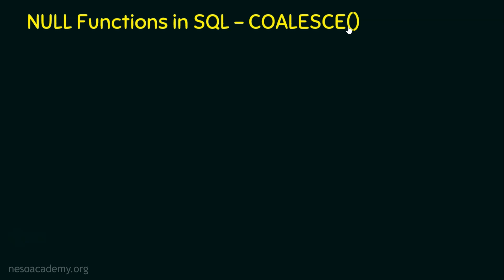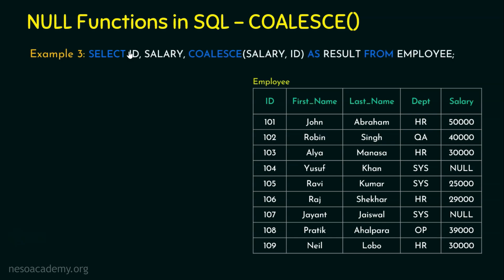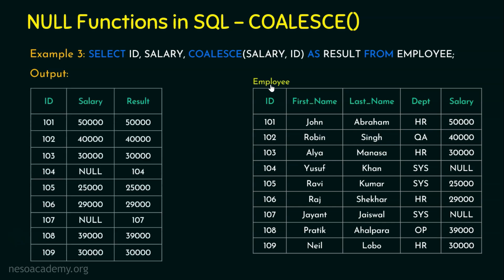Let's see an example using the same employee table. Example number 3: SELECT id, salary, COALESCE(salary, id) AS result FROM employee. Apart from id and salary, we create one more output column storing the result of the COALESCE function. The output contains three columns: id, salary, and result. COALESCE uses two expressions here — salary and id — and returns the first occurring non-null value. For a row with salary 50000 and id 101, since salary is not null, it returns salary (50000) as the result.